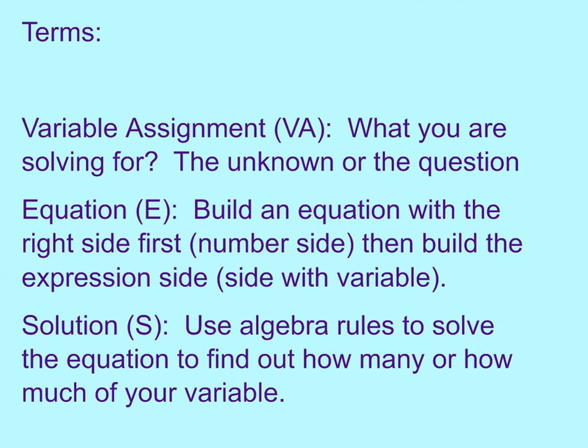The next term is the equation — that is E. We build an equation with the right side, the number side, first — that's the equals number. Then we build the left side, the expression side, which is the side with the variable. It's easier to do the right side first, then build the left side. Then the solution: we use algebra rules to solve the equation we built to figure out how many or how much of the variable we're solving for.